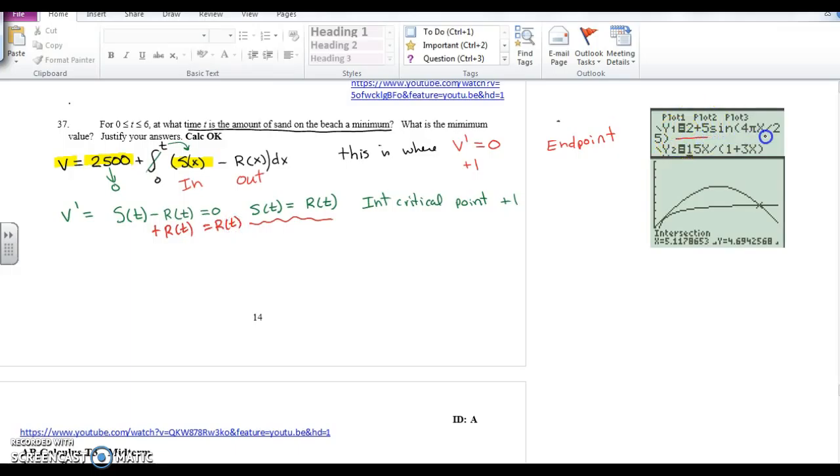I plugged them into my calculator, calculated the intersection, and recorded to three decimal places. The interior critical point was T equals 5.117 or 5.118. You can just cut off at three decimal places or round, and the AP board gives you credit either way.